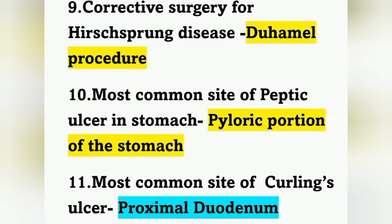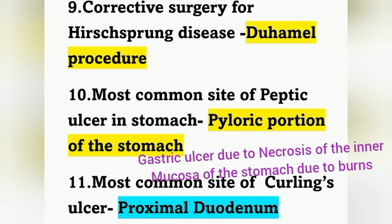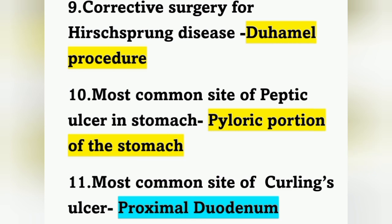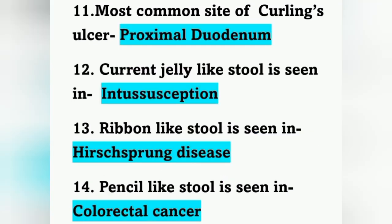Next question: most common site of curling ulcer is the proximal duodenum. Peptic ulcer — most common site is the pyloric portion of the stomach. Curling ulcer occurs due to burns; it causes necrosis of the inner mucosa of the stomach.